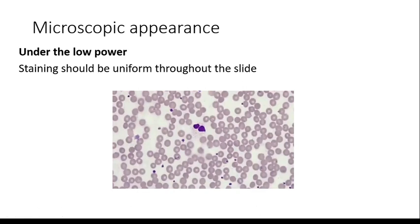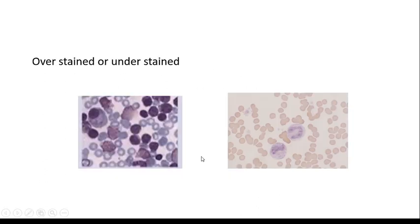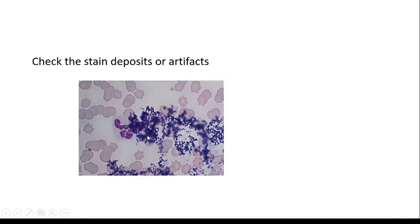Microscopic appearance. Scan the slide under low power. Determine the overall staining quality of the slide. Check whether the staining is uniform throughout the slide. Then, check whether the slide is overstained or understained. Scan for staining deposits or artifacts on the smear.